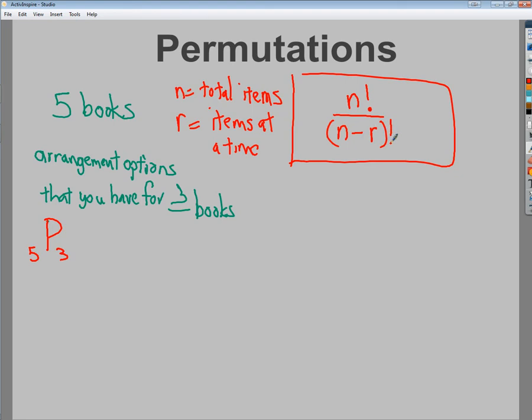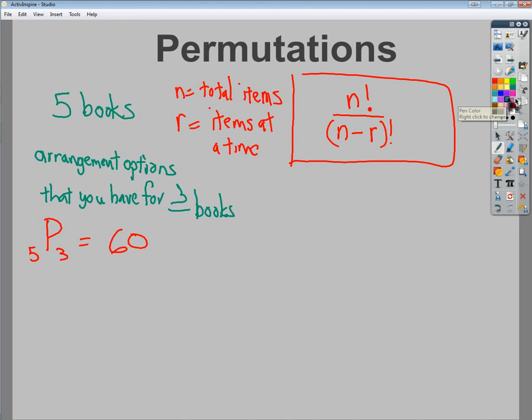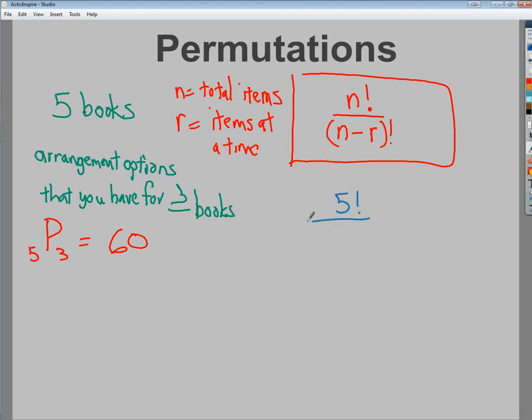We talked about the fact that it'd be 60 total options in our scenario. So we already know the answer is 60. Let's look at it in terms of what the formula says. In the formula, I would have five factorial, which is five times four times three times two times one. And then on the bottom I would have n, which is five, and I'll be subtracting the three, which is how many I want to arrange, and I'm going to make that a factorial.